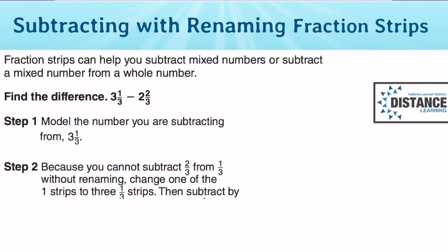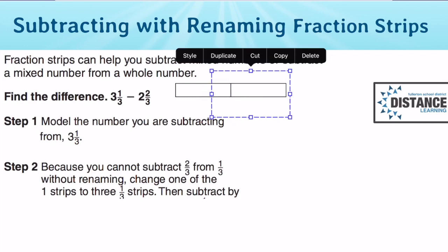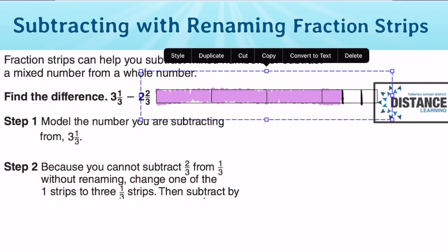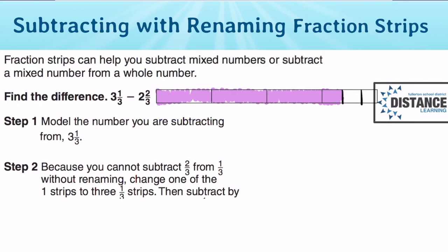To model 3 1/3, we know there are 3 wholes, so we are going to create 3 rectangles: 1, 2, 3, and we need a 1/3. What we can do to create a 1/3 is create another rectangle and cut it into 3 parts. And 3 1/3 will be represented by the purple color. So that's 3 1/3, I'll show you by moving it over. It's 3 and then 1 part of the 4th one.